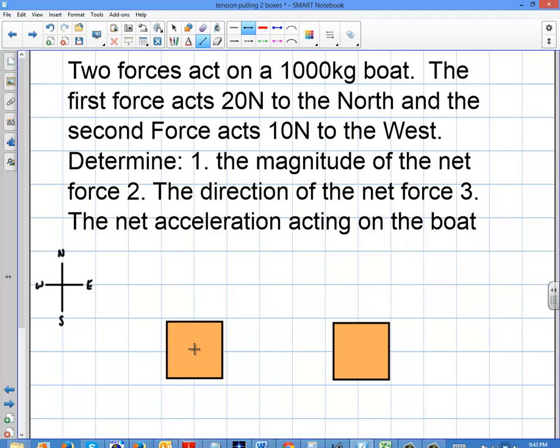So I'm going to define my forces here. I've got 20 newtons to the north, and I've got 10 newtons to the west. So these are my forces here acting on this boat. So let me just label these. So force one is going to be 20 newtons, and force two is going to be 10 newtons to the west.